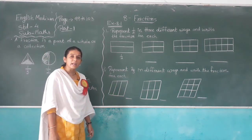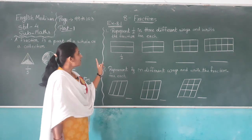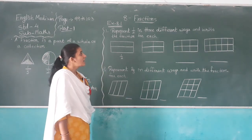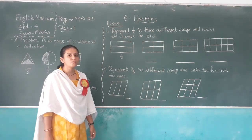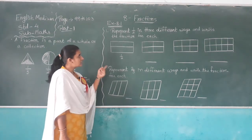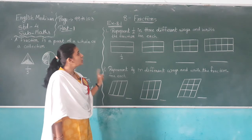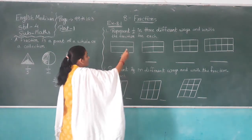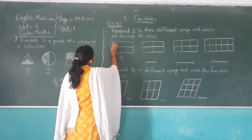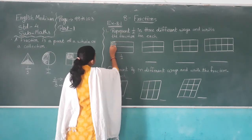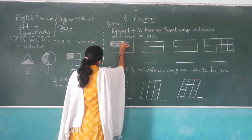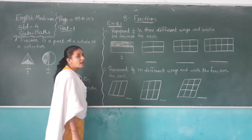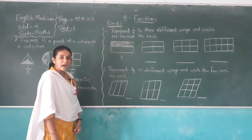Exercise number 8.1: Represent one half in three different ways and write the fraction for each. Here, one out of two means this rectangle is divided into two parts and one part is shaded — it's called one out of two.